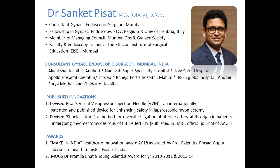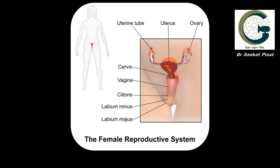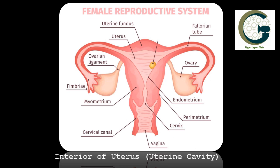The initial two and a half minutes of this video contains information about the normal anatomy and functioning of the female reproductive tract, which has the uterus — a muscular organ in the center where the baby actually grows — and a pair of tubes and ovaries on each side. There are two fallopian tubes, two ovaries, and one uterus forming the female genital tract, along with the cervix and vagina. The interior of the uterine cavity is also known as the endometrium; it is here that the normal pregnancy grows.